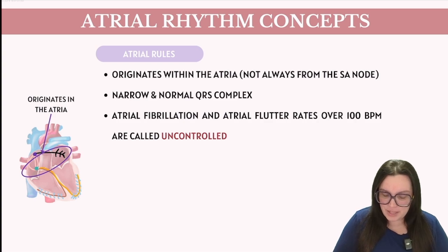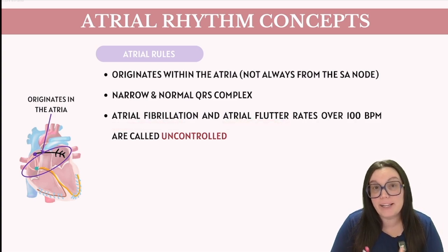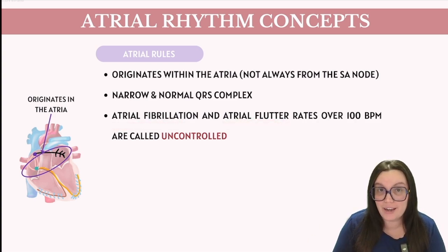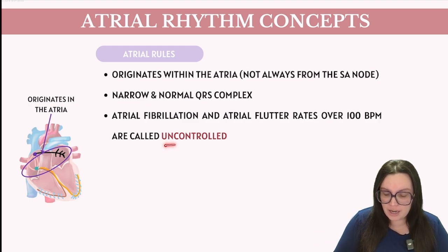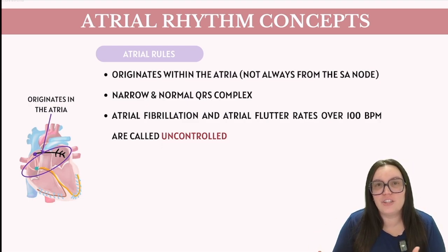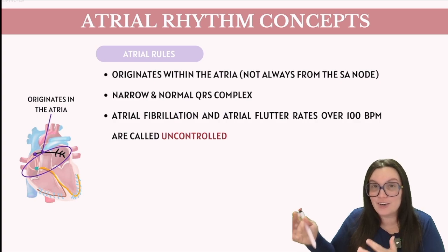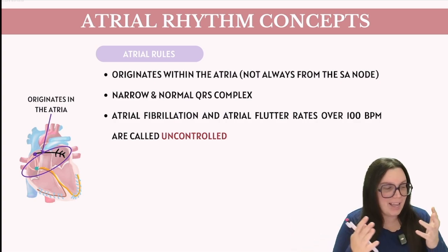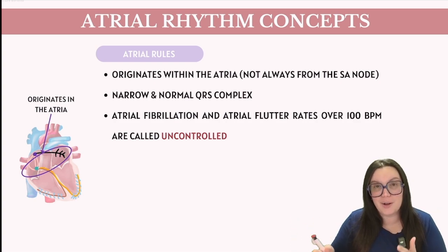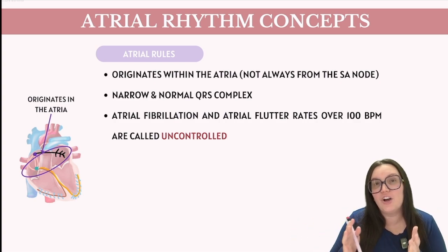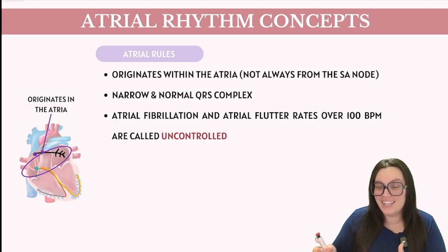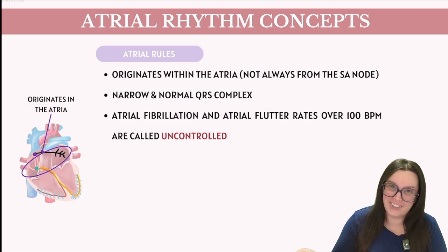Lastly, with atrial fibrillation and atrial flutter, anytime we see rates greater than 100 beats per minute, that means we're going to call it uncontrolled. There's no such thing as atrial fibrillation tachycardia or atrial flutter tachycardia — we actually call it uncontrolled. So we're going to talk about the differences between controlled and uncontrolled when it comes to AFib and AFlutter.